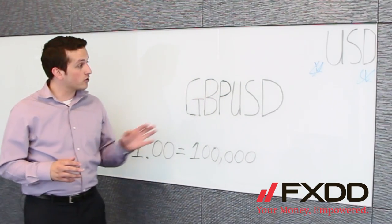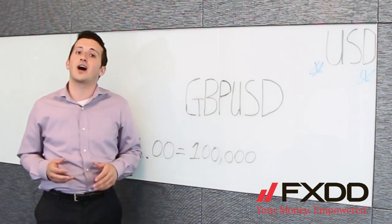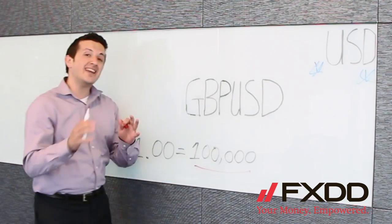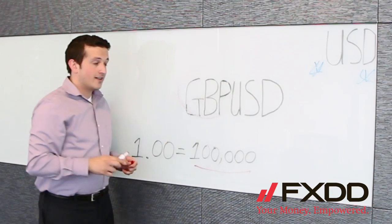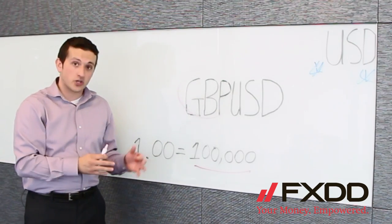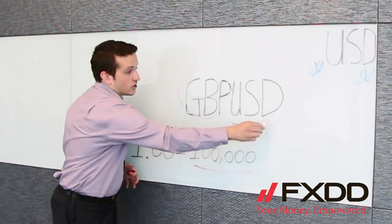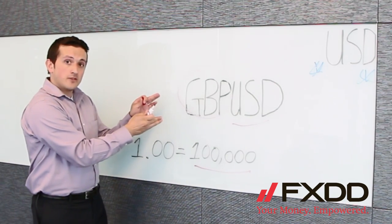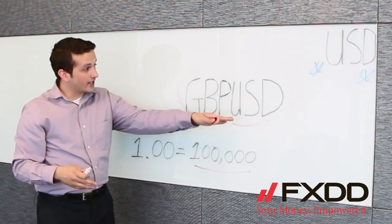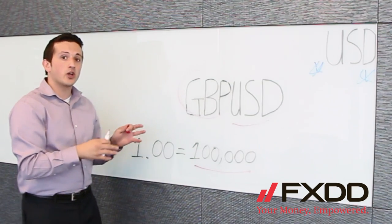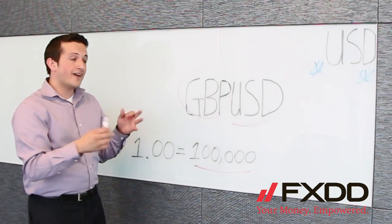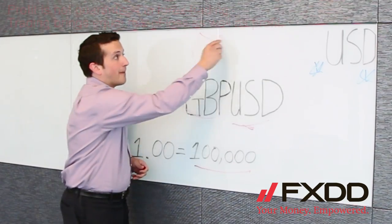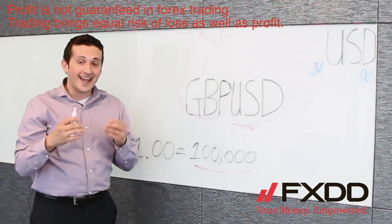Let's say you want to buy a currency pair, such as sterling dollar, for a standard lot. What you'll actually be doing is purchasing 100,000 units of the base currency, which here is Great British Pounds, and selling the equivalent in the counter currency, which in this instance is United States dollars. You'll be speculating that the value of the Great British Pound is going to appreciate against the United States dollar, so you can sell back the pair at a higher price and gain a profit.